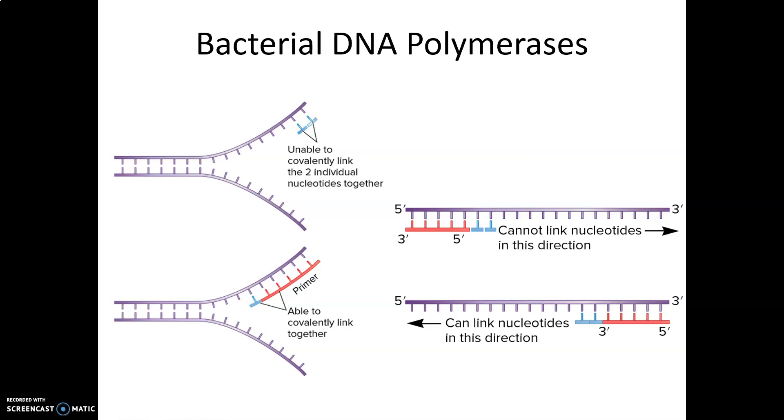Our DNA is antiparallel—it runs five prime to three prime on one side and three prime to five prime on the other. DNA polymerase can only function in one direction, giving us the leading versus lagging strand.